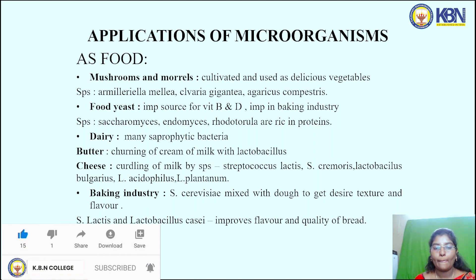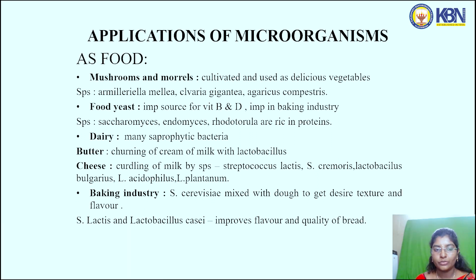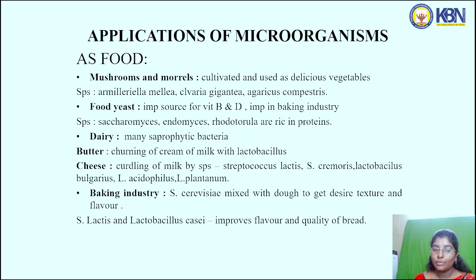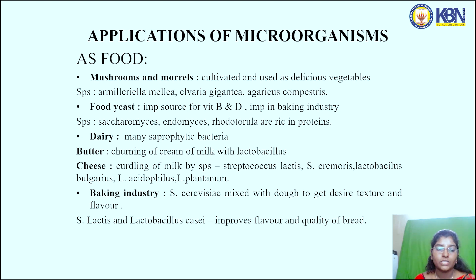In the dairy industry, many saprotrophic bacteria are used. In butter, cream is churned with Lactobacillus. In cheese, the curdling of milk is done by species of Streptococcus lactis, Streptococcus cremoris, Lactobacillus bulgarius, Lactobacillus acidophilus, and Lactobacillus plantarum. In the baking industry, Saccharomyces cerevisiae is mixed with dough to get desired texture and flavor, while Streptococcus lactis and Lactobacillus casei improve the flavor and quality of bread.